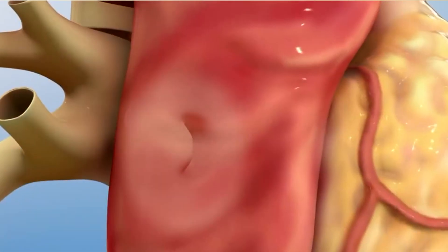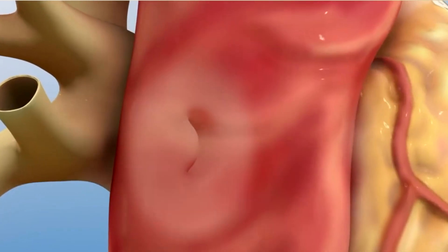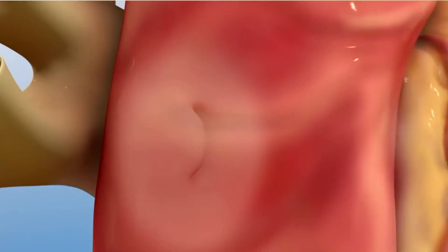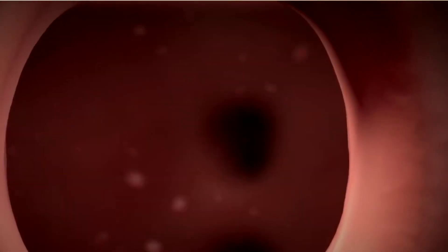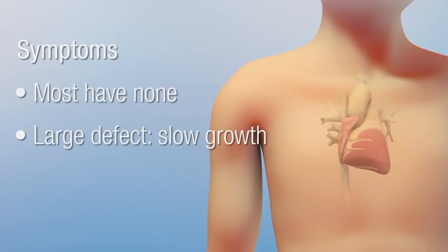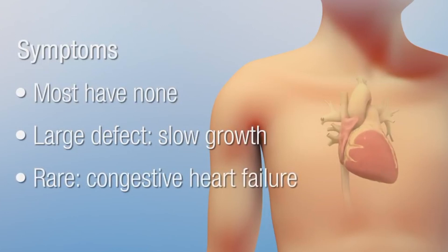For most congenital heart diseases, the child may actually grow well if the problem is not large enough to cause symptoms. But for those that become symptomatic, you may notice the child using a lot of energy when breathing or breastfeeding — sweating a lot, or having blueing of the lips and fingers. They may also show growth stunting and failure to thrive. Those are some of the most common symptoms a child with congenital heart disease would present with.